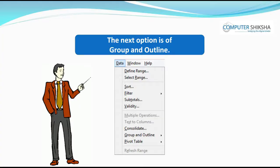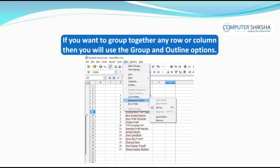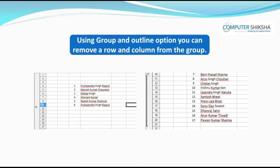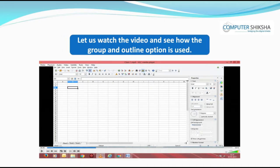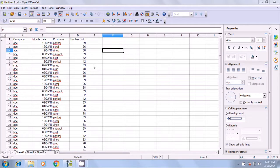The next option is Group and Outline. If you want to group together any row or column, you will use the Group and Outline options. If you like, you can remove a row or column from the group also. Let us watch the video and see how the Group and Outline option is used.